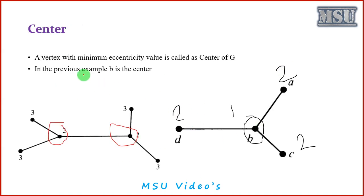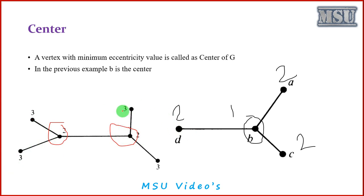Now consider this graph and we are calculating the center value. A vertex with minimum eccentricity value is called a center. To recap: distance is defined for every pair of vertices, eccentricity is defined for every single vertex, and center is defined for a graph. Now for this graph, the eccentricity values of the vertices are one, two, three, three, and three. For other vertices, eccentricity values are two. The vertex B is actually the center of this graph, with eccentricity value one.